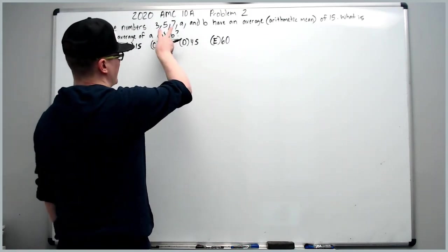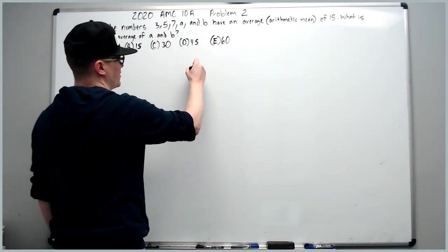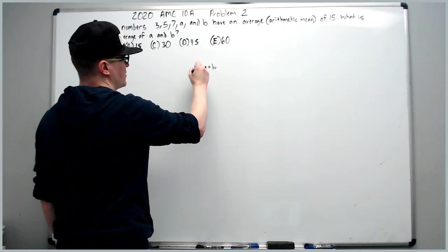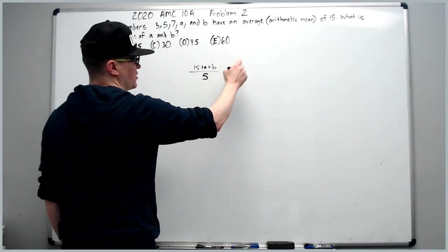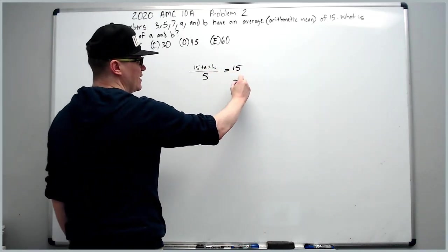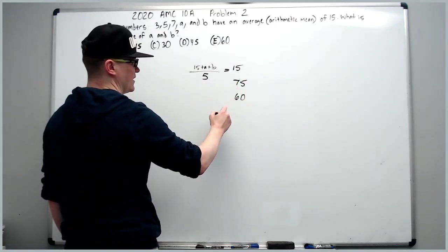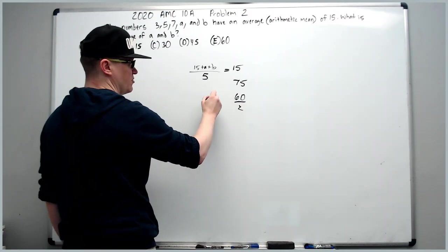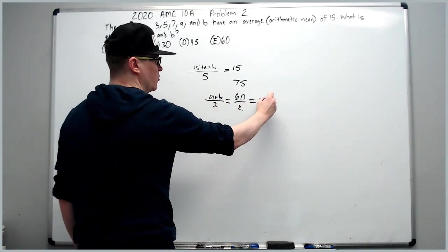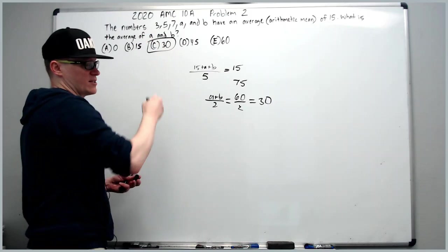Just carry out what it says. Add this up, 10 plus 5 is 15, plus A plus B. You added five things, divide by 5, it should equal 15. Immediately multiply to get 75, subtract 15 to get 60, divide by 2 to get A plus B over 2, which is the average, and is 30.